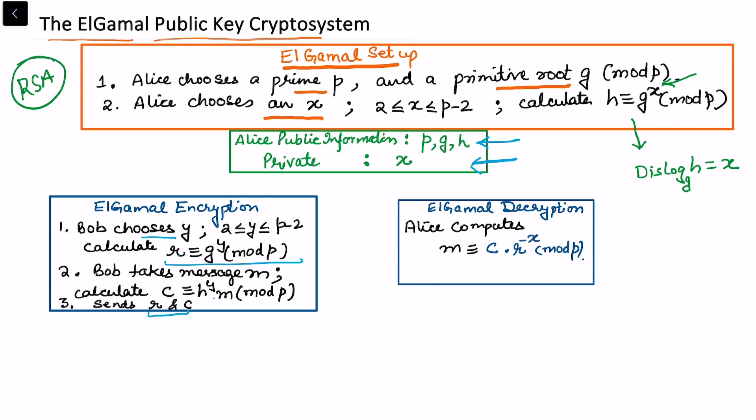Alice computes m, which is the original message, that is c times r^(-x) mod p.